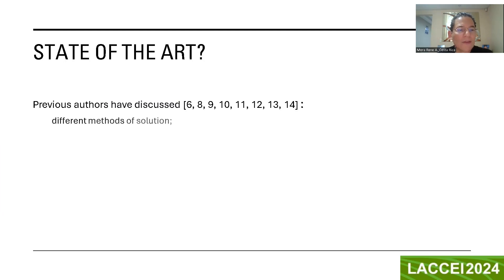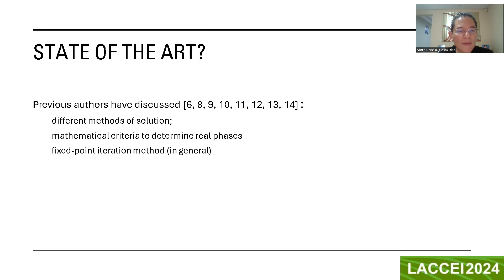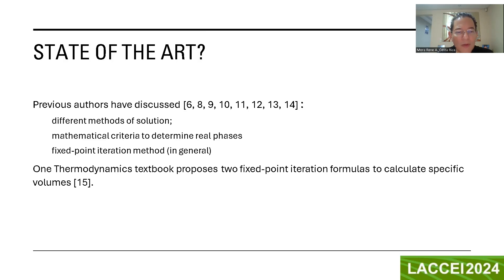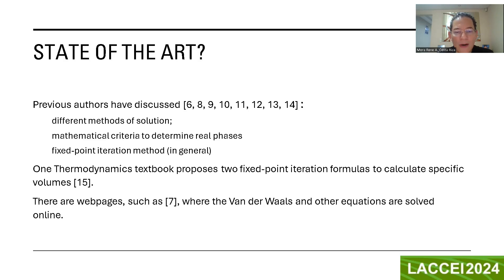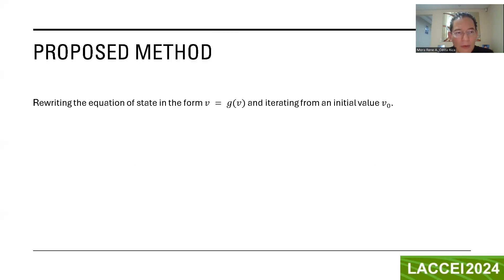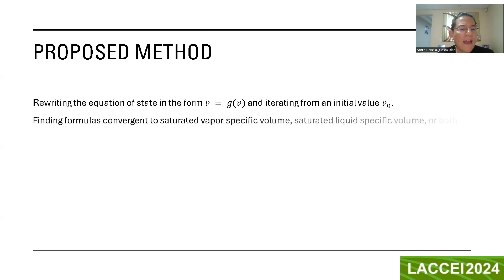Previous authors have discussed several methods of solution of the equations of state, the mathematical criteria to determine real phases, and the fixed-point iteration method in general. Another thermodynamics textbook proposes two fixed-point iteration formulas to calculate specific volumes. There are web pages where the Van der Waals and other equations of state are solved online. The proposed method involves rewriting the equations of state in the form V equals function of V and iterating from an initial value V₀, finding formulas convergent to saturated-vapor specific volume, saturated-liquid specific volume, or both.